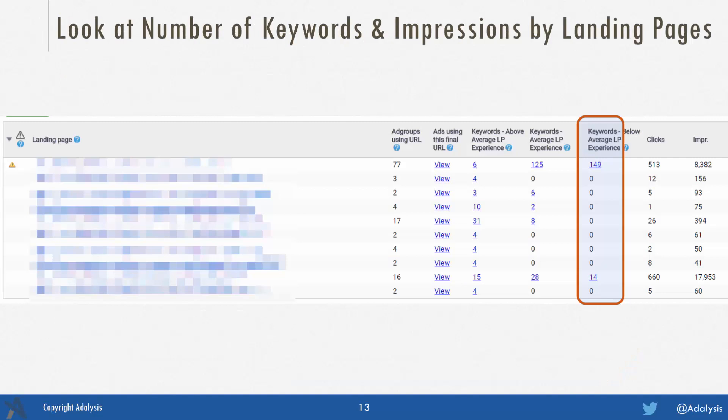When landing pages are used in multiple ad groups, look at how that landing page performs with the various keywords sending traffic to it. For instance, the first landing page in this list has six keywords above average but 149 below average — you'd want to look at those below average keywords and determine what other page should receive that traffic, or whether you need to create pages for those keywords. Further down, another page has 14 keywords with below average landing page experience, but is good for 15 keywords and average for 28. So you may want to look at those 14 to see if they need a different page or just a slight page adjustment.